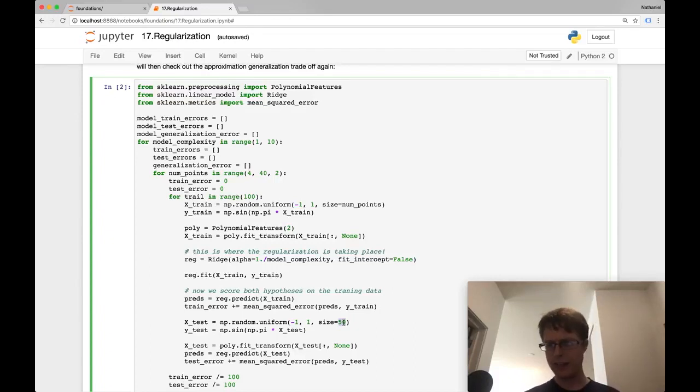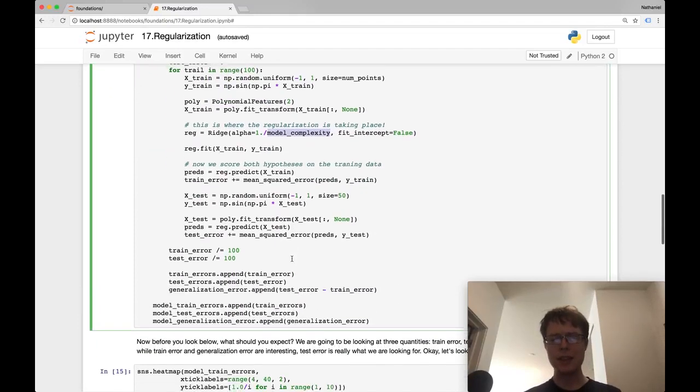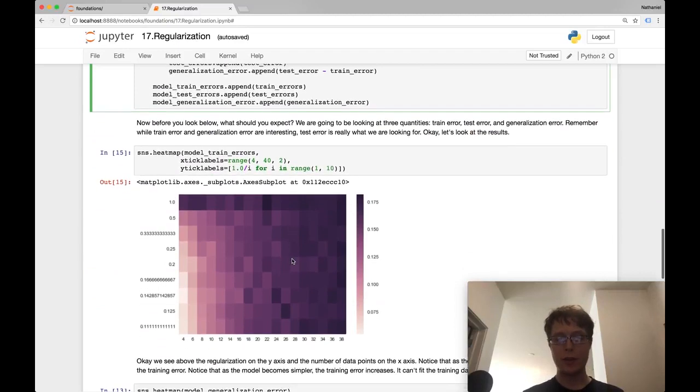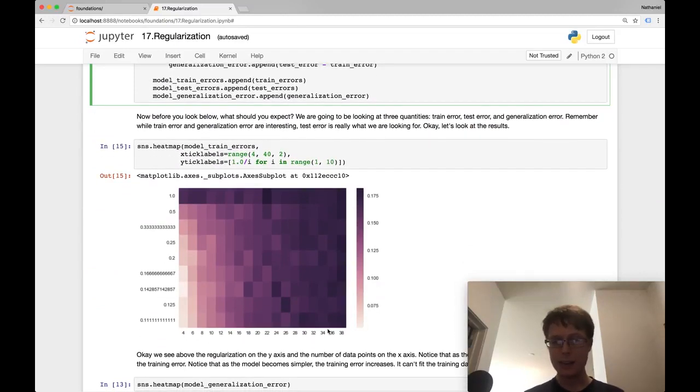In this case, I'm fitting a pretty small model, two polynomial features. But I'm adding regularization. Here I've got the normal chart. On the x-axis, I've got the number of data points that our model has access to. On the y-axis, I've got the regularization penalties.